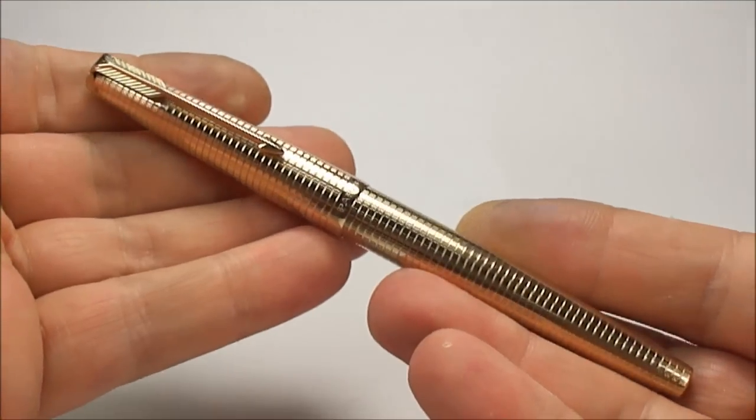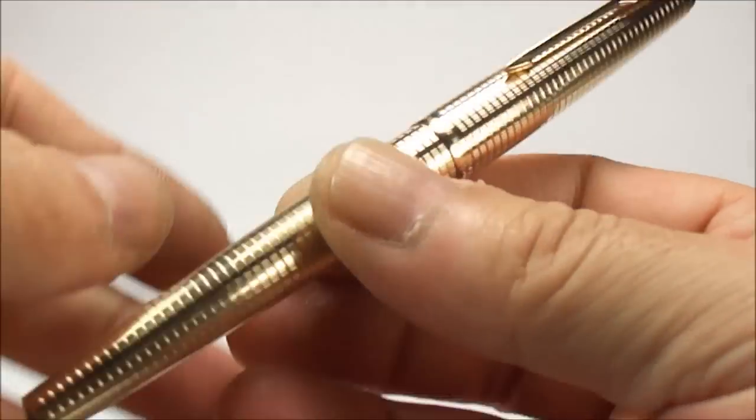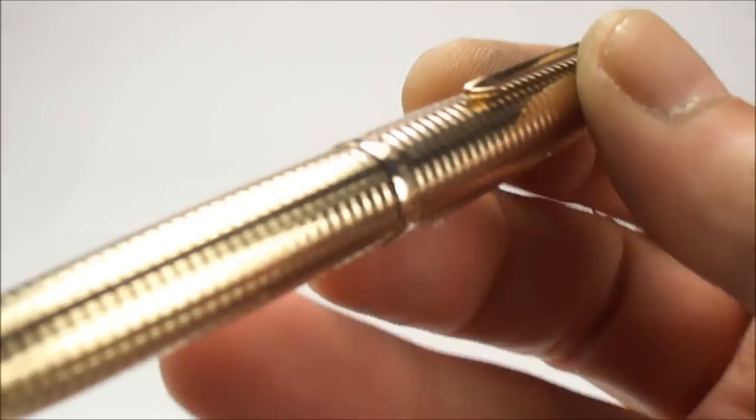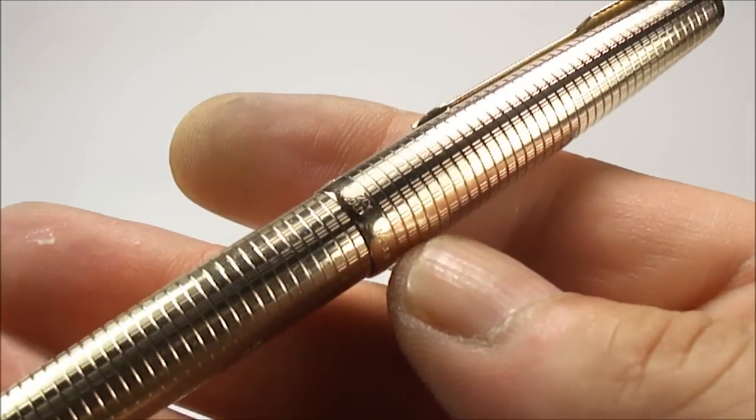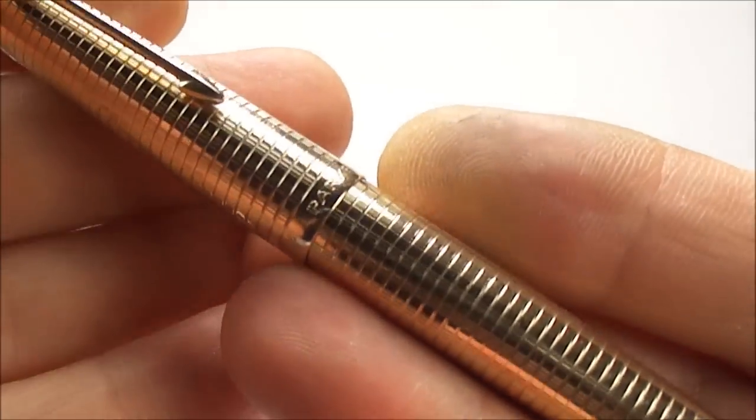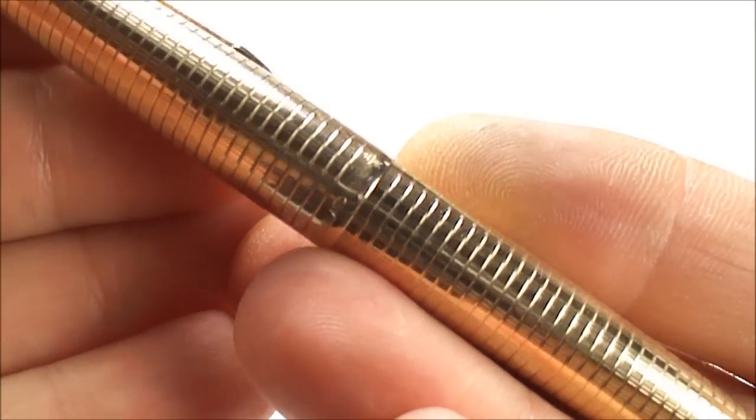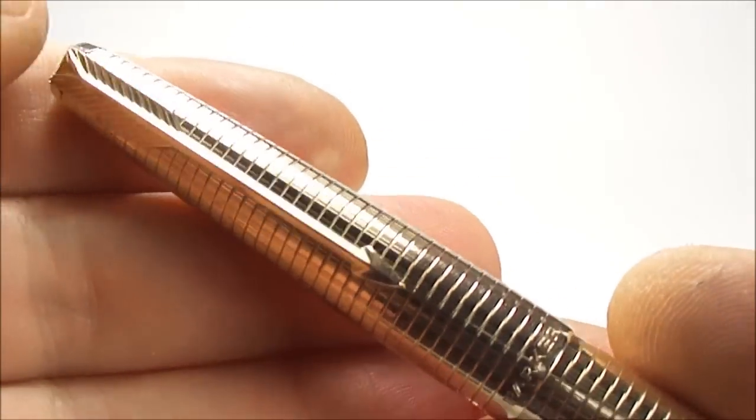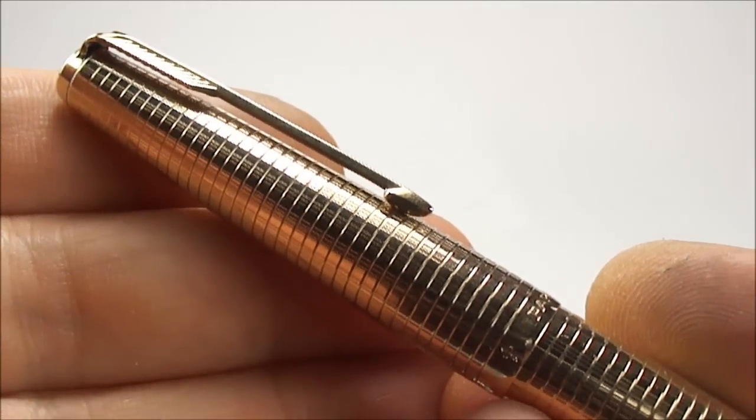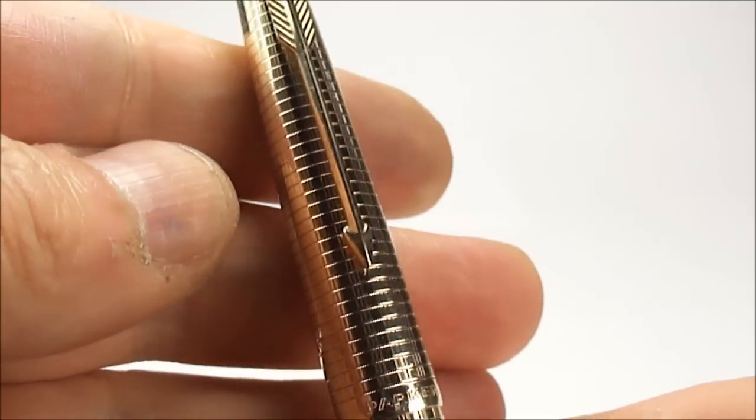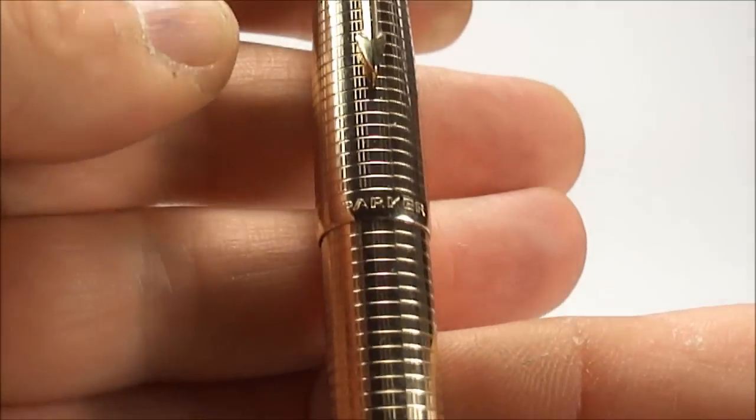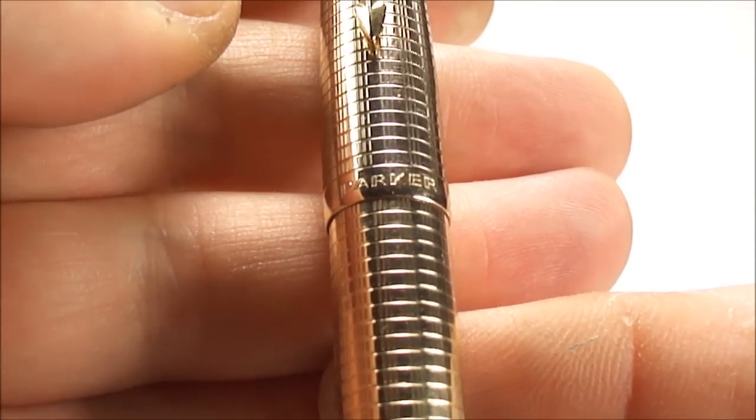There we have it ladies and gentlemen. Let's give you a close-up. I'm hoping you can see the pattern in a close-up situation here. This is the Parker 61 Consort and as I said before it comes in this beautiful horizontal and vertical lines.